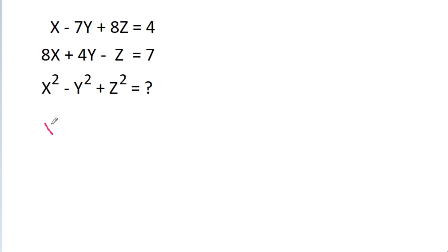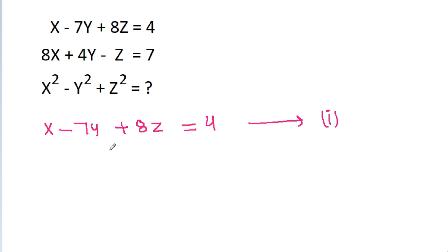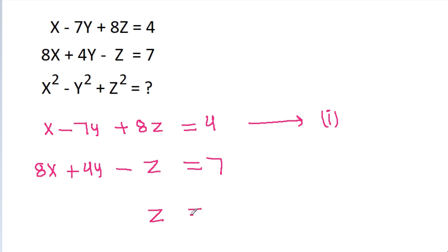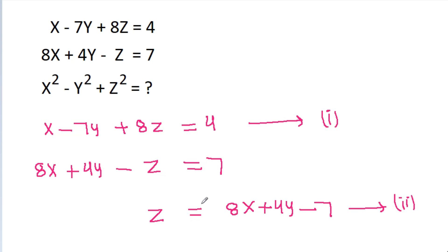We have given that x - 7y + 8g = 4 — suppose this is equation 1. And 8x + 4y - g = 7, from which we get g = 8x + 4y - 7. Suppose this is equation 2. Now we put the value of g into equation 1.